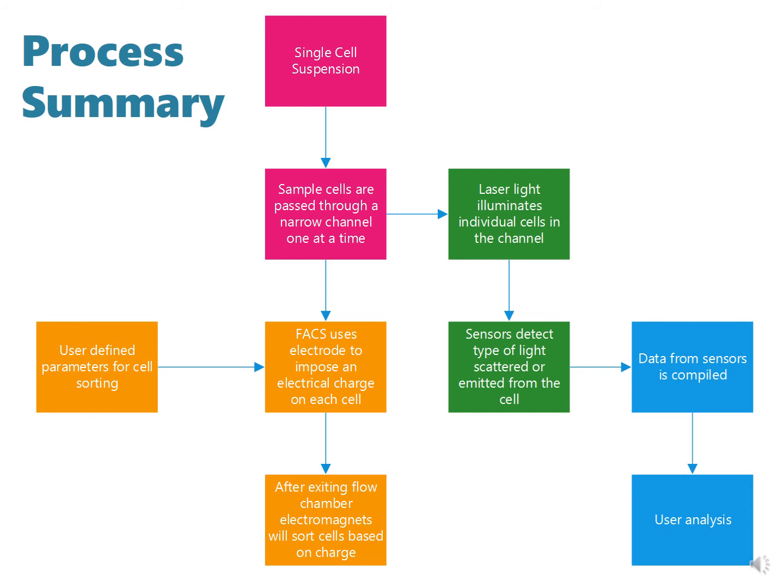In summary, the process starts with a single cell suspension that is passed through a narrow channel one at a time. Laser light illuminates individual cells in the channel and scattered light as well as fluorescent emission is picked up by the detectors. These detectors, in turn, convert this information to a digital signal. The signal can then be analyzed by the user.